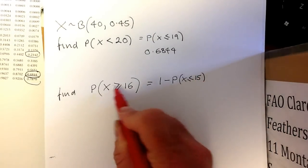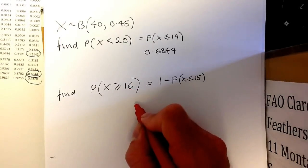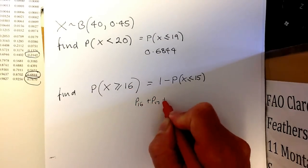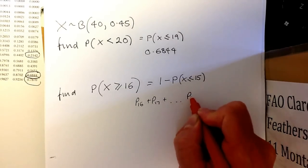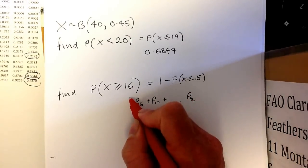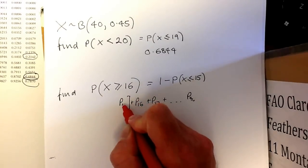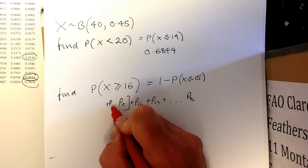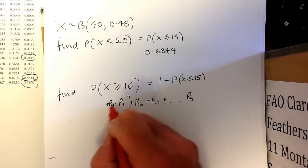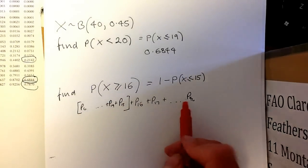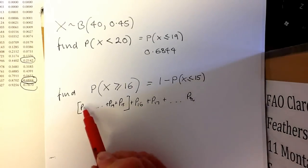I'll show you why this works. Probability that we're greater than or equal to 16 requires P(16) plus P(17) all the way up to P(40). We know all the probabilities add up to 1, so if we take away all the probabilities before it, all the way down to P(0), we're subtracting P(15) to P(0) from 1.